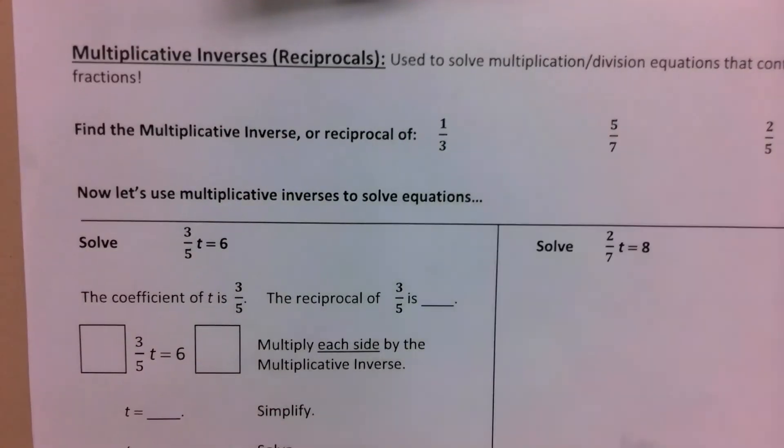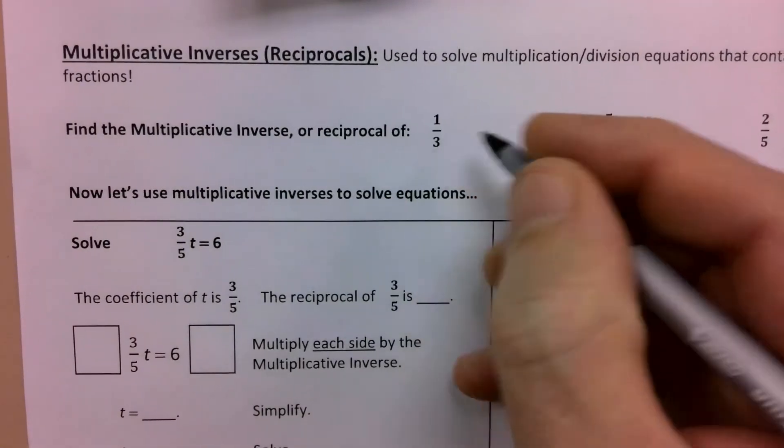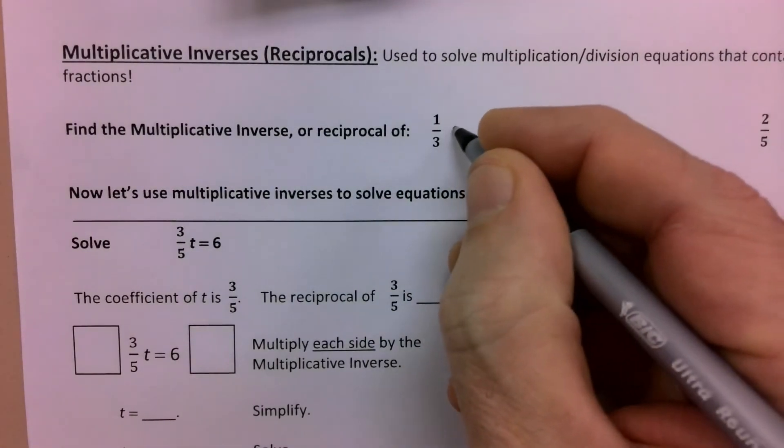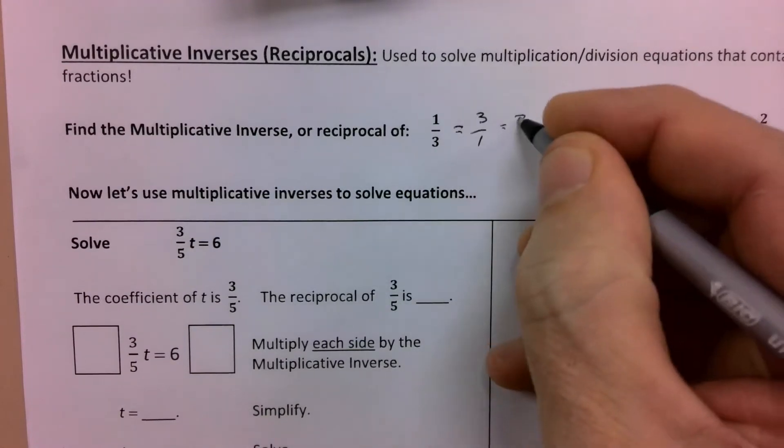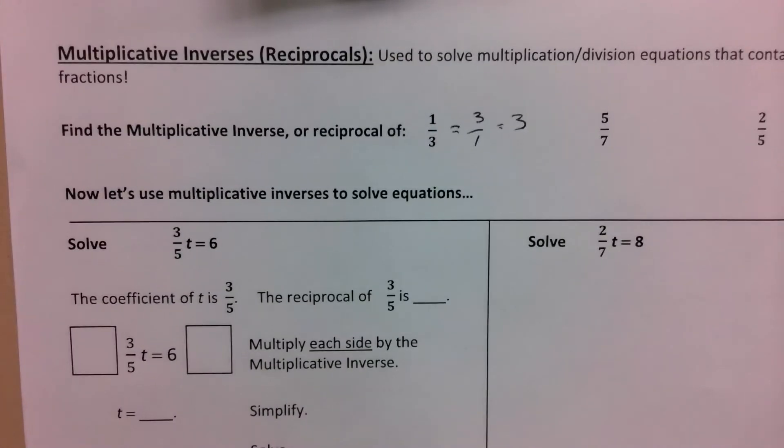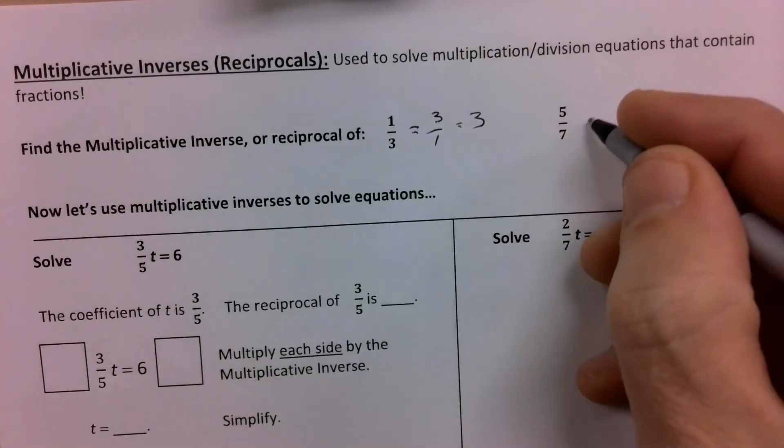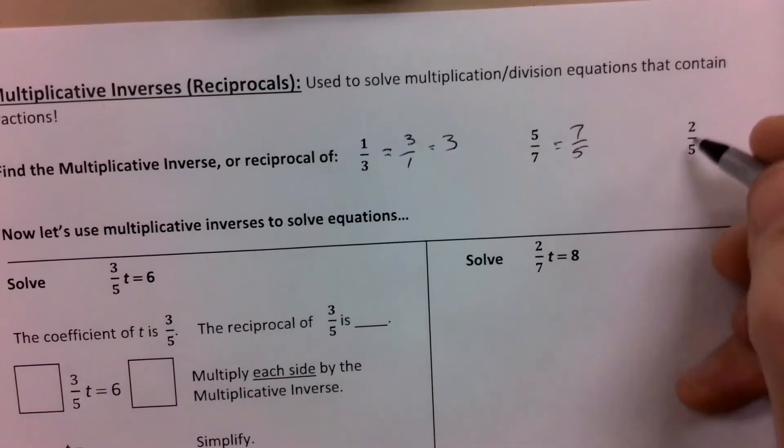So reciprocals are just flipped fractions. So I'm just going to show you the three reciprocals for the three that we have up here. The reciprocal of one third, which is one over three, is just three or three over one. But we would just say that's probably just three, right? Knowing that three over one is three. Second one, the reciprocal of five sevenths is just seven fifths. And the reciprocal of two fifths is five halves.